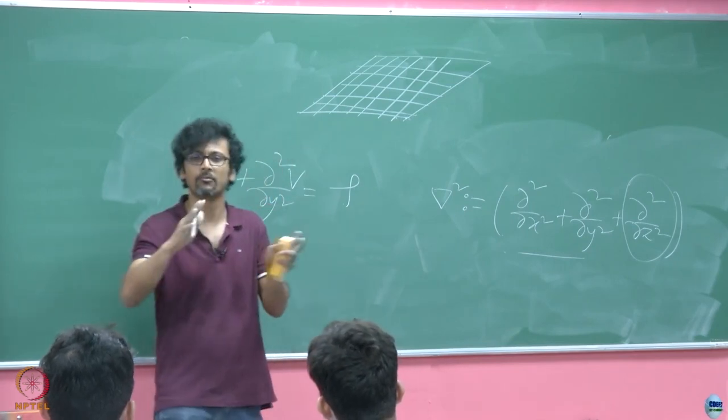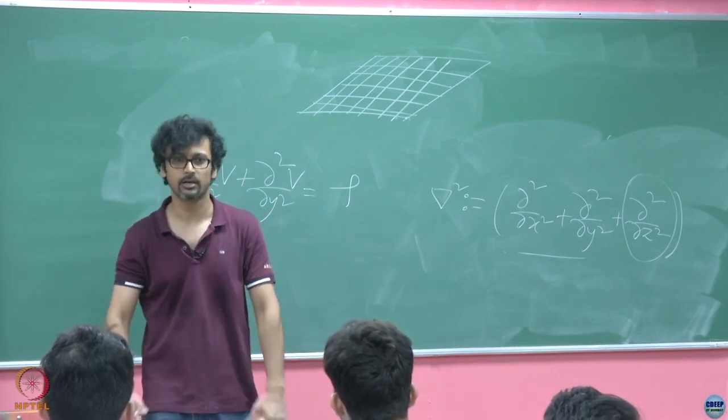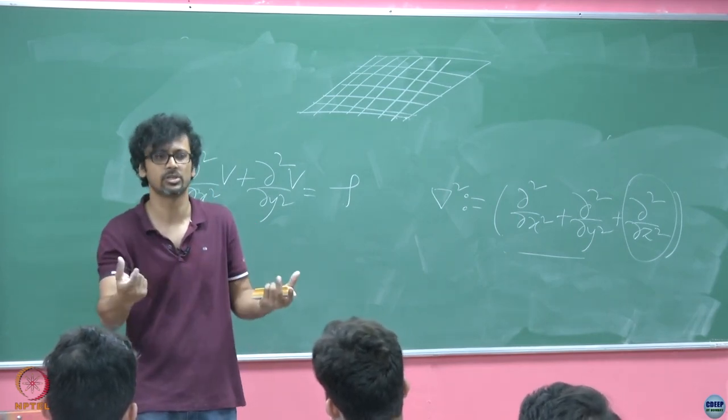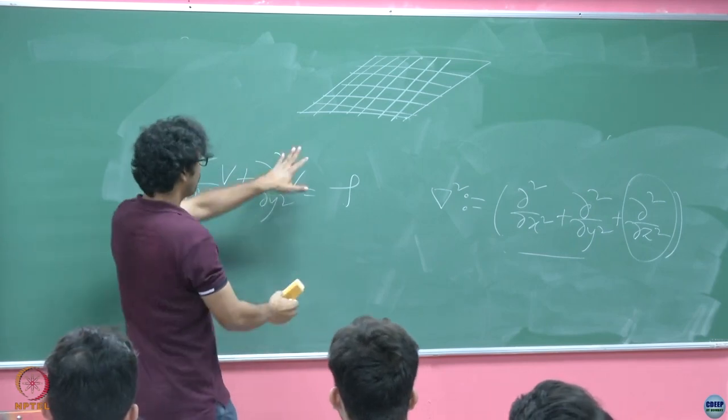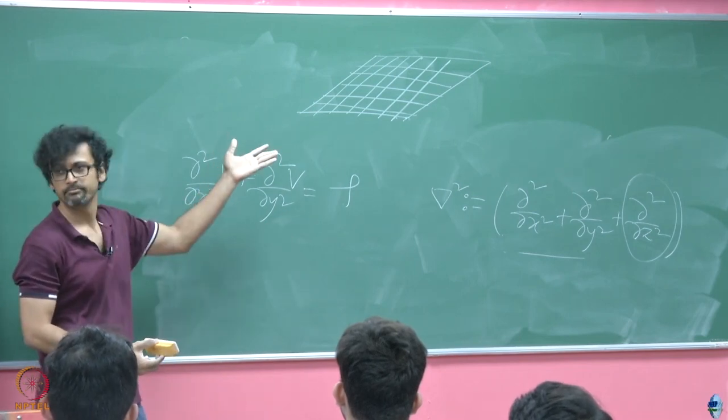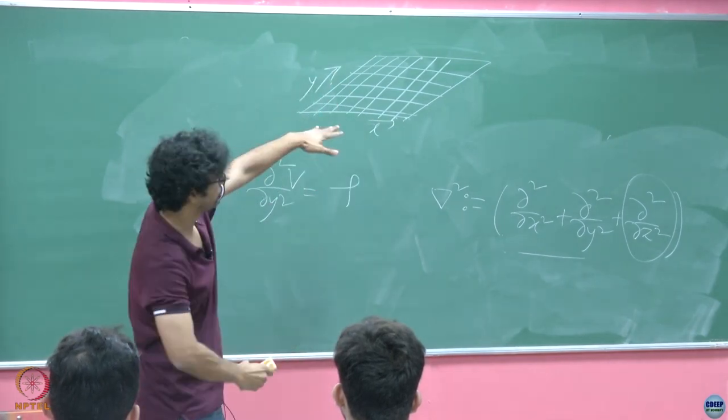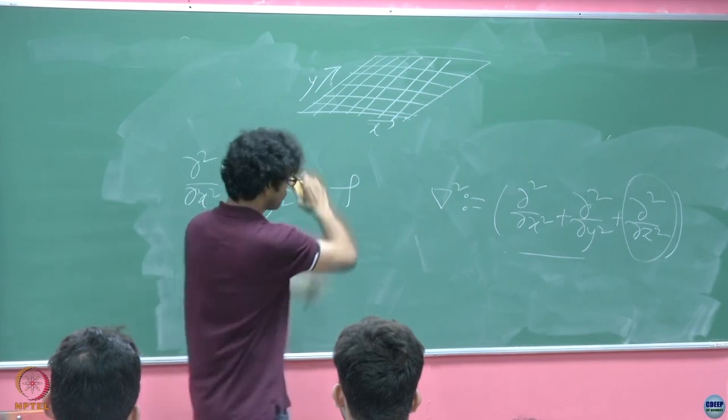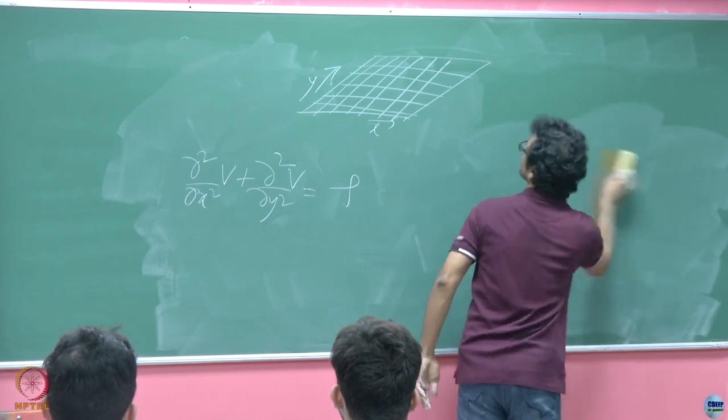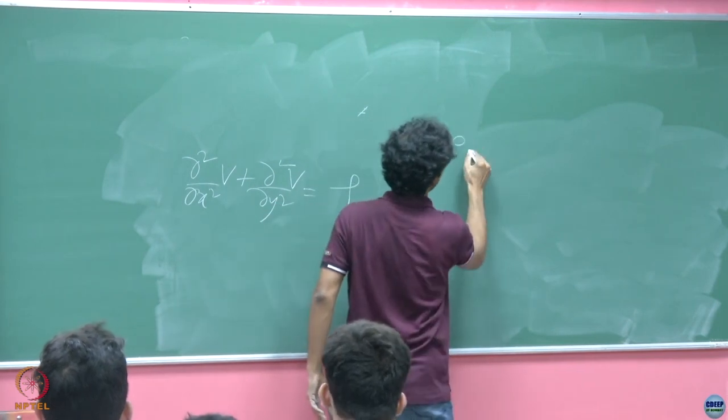If on the other hand, computational power is at a premium, then we take coarser tessellations, coarser grids. And we say, there is a lot of margin for error. It is like if you dish out more money, I will give you clearer and better results. But if you do not have that much computational capability, you are only going to get coarser results. That is basically what it is. So then it turns out that we have to discretize this equation in space.